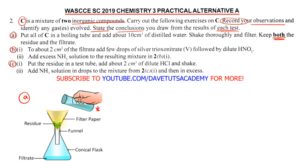After filtering, we note the color from the residue or the filtrate and tabulate our observations to draw conclusions. In part B, we take about 2 cm³ of the filtrate and add a few drops of silver nitrate solution followed by dilute HNO₃. We note what we observe and record appropriately.